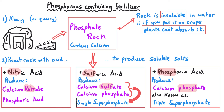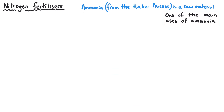All three of these different reactions with acid produce different salts, but what they have in common is that all of these salts are soluble. So they can be used directly as fertilisers to enrich the phosphorus content of the soil. We can also produce fertilisers containing nitrogen in two different ways, and both of these ways use ammonia as one of the raw materials.